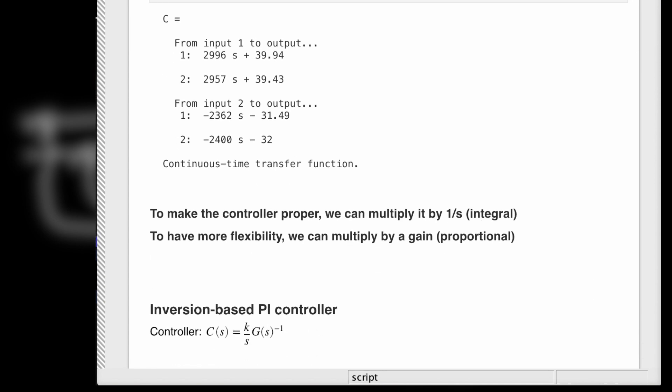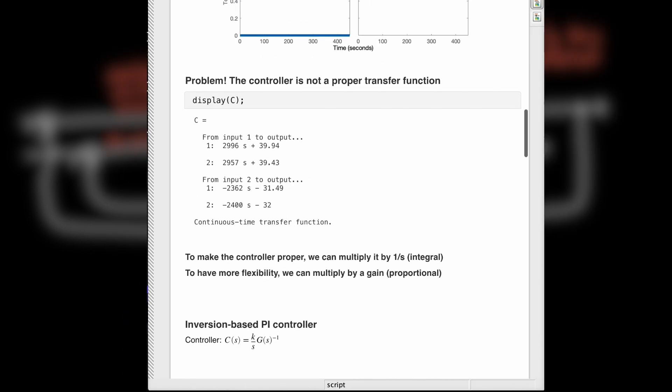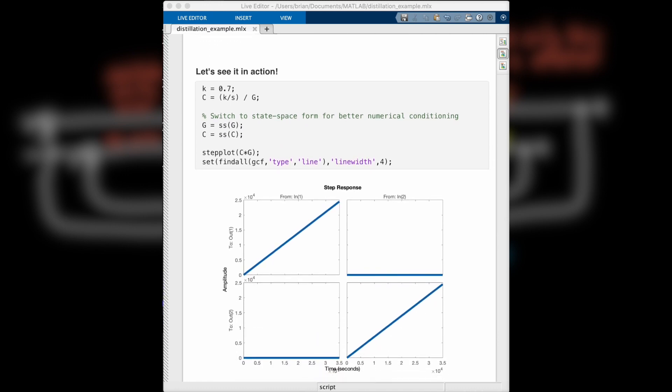This is a so-called inversion-based PI controller, since we've added this proportional gain and this integrator. Now, if we look at the open-loop response of the combined controller and plant, we see that instead of a straight pass-through, it now behaves like an integrator, so no surprise there.